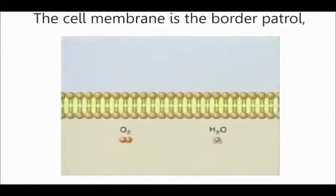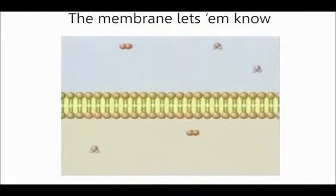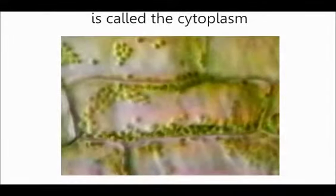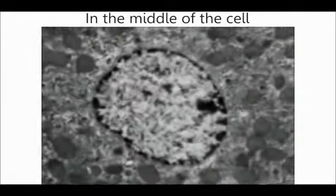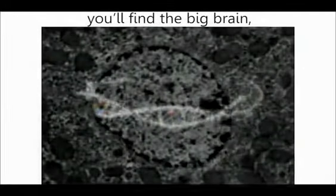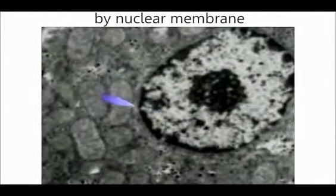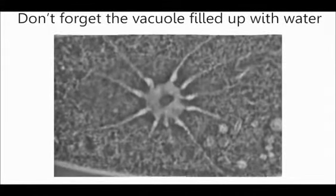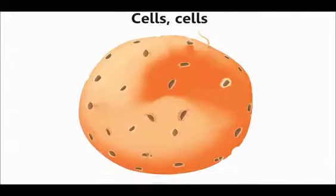The cell membrane is the border patrol — who can cross over? The membrane lets them know. The gooey stuff inside is called the cytoplasm; it holds the organelles. In the middle of the cell, you find the big brain — the nucleus is surrounded by nuclear membrane. Don't forget the vacuole, it's filled up with water. It's a basic heat for life, when this rap keeps getting hotter.